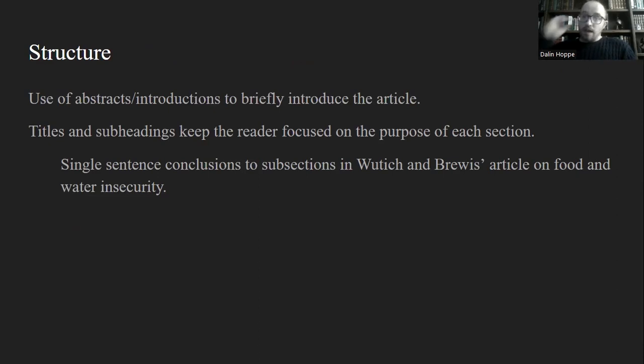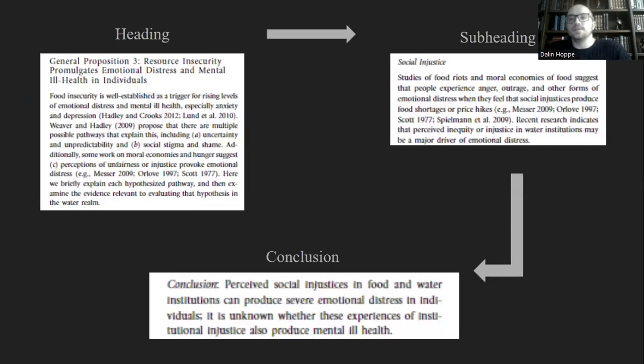Wutich and Brewis in their food and water article use an interesting thing where they have headings of the general propositions and they have subheadings where they talk about different things within that general proposition that might be affecting it. And then at the end of each of these subheadings, they have a small conclusion where they just basically frame, this is what we're trying to get out with this section of the article, which is very helpful, very interesting, makes it easier to read and understand what's going on.